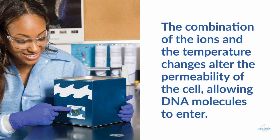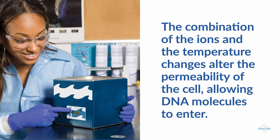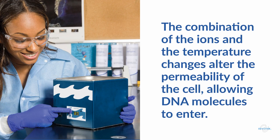In a heat shock transformation, the cells are treated with calcium chloride to make them competent. DNA is added to the cells before they are heat-shocked, or moved quickly between two very different temperatures. It is believed that the combination of calcium chloride and the rapid change in temperature changes the permeability of the cell wall and membrane, allowing DNA molecules to enter the cell.